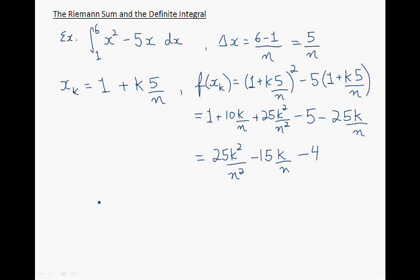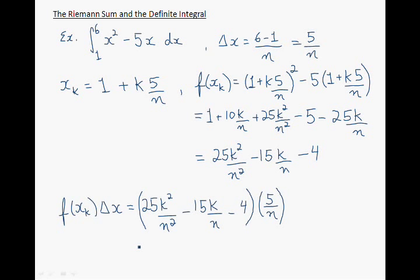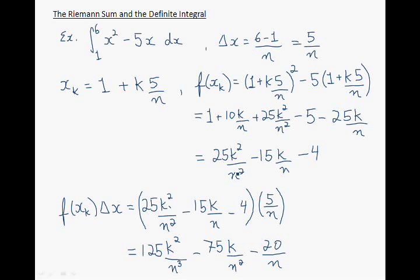The next step is to find f of xk times delta x, and this gives us the area for rectangle number k. This equals the following expression, and it gives us the area for rectangle number k.